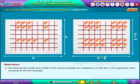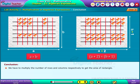We observed that the length and breadth of the rectangle are increased by 2 units and 1 unit respectively when compared to the first rectangle. We have to multiply the number of rows and columns respectively to get the area of rectangle.